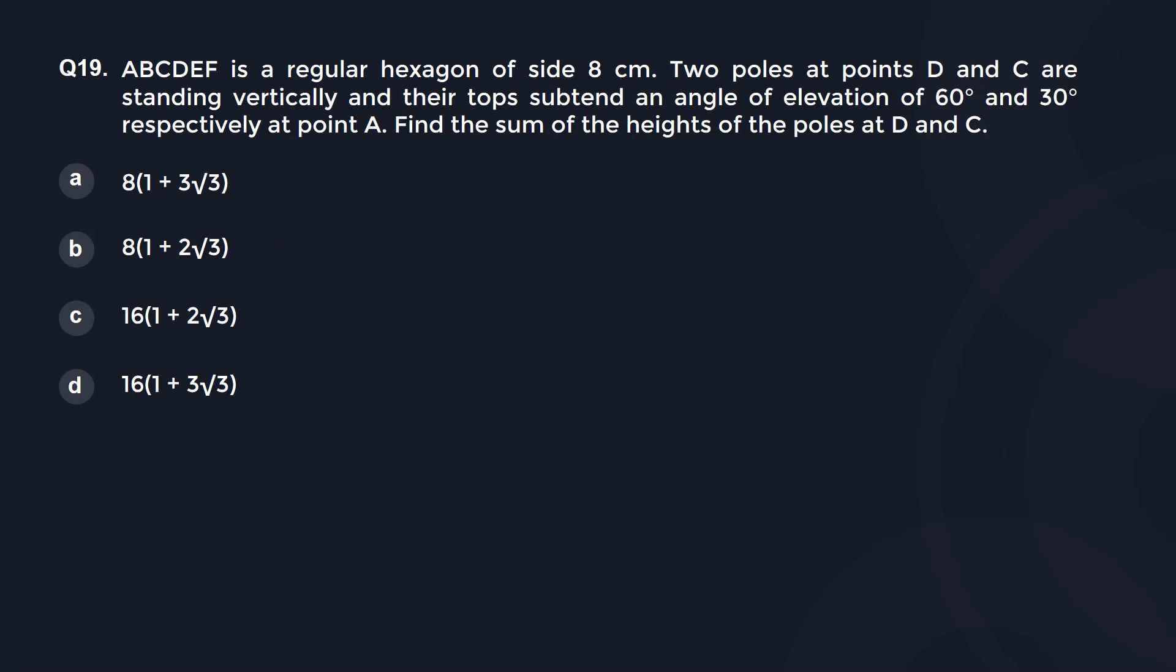Question number 19. ABCDEF is a regular hexagon of side 8 centimeters. Two poles at D and C are standing vertically and their tops subtend an angle of elevation 60 degrees and 30 degrees at point A.